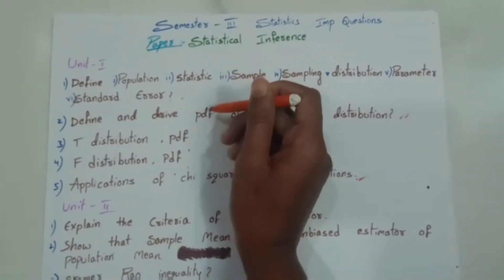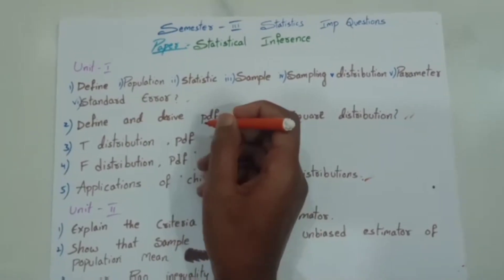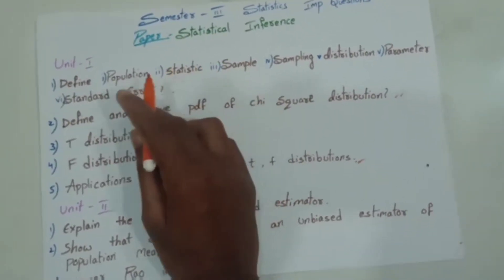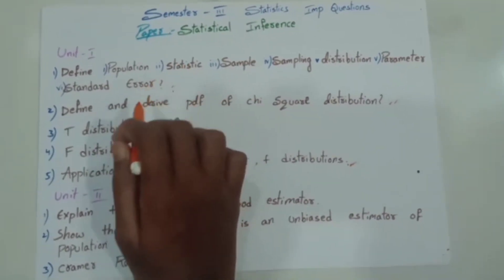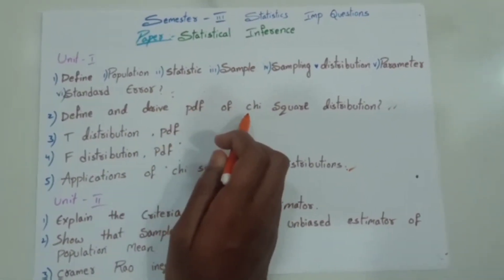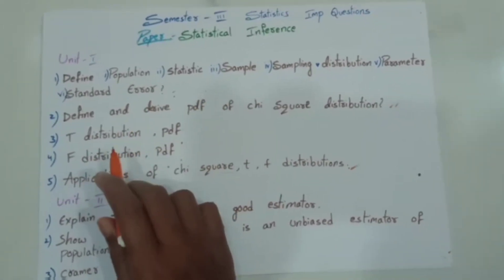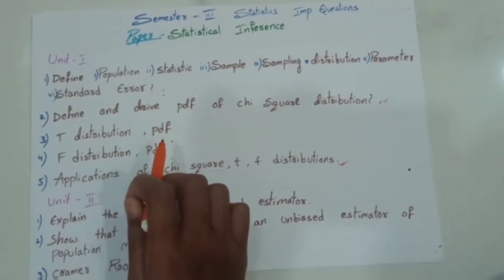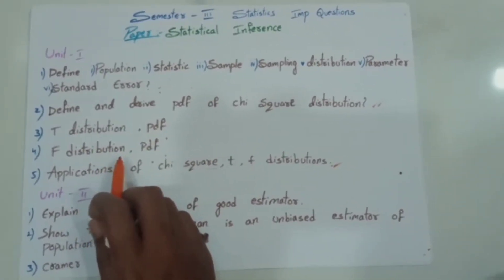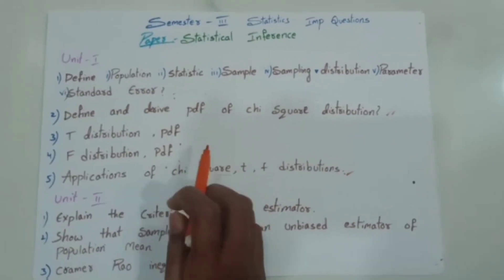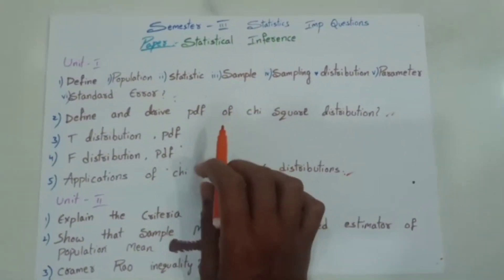In each unit, there are 5 questions. The first question is definitions, which we are going to prepare for either 5 marks or 10 marks. Next, chi-square distribution — definition, derivation, and applications. Then t-distribution — PDF, derivation, and application. And f-distribution — definition, PDF derivation, and application. So these are the 5 questions.